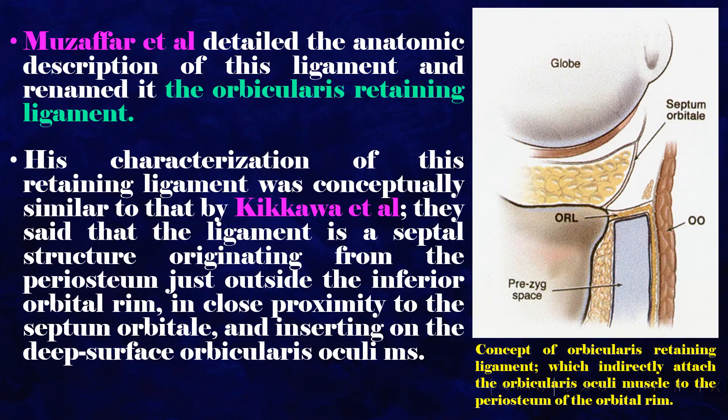Muzaffer et al. detailed the anatomic description of this ligament and renamed it the orbicularis retaining ligament. His characterization was conceptually similar to that by Kikawa et al. They described the ligament as a septal structure originating from the periosteum just outside the inferior orbital rim, in close proximity to the septum orbitale, and inserting on the deep surface of the orbicularis oculi muscle.